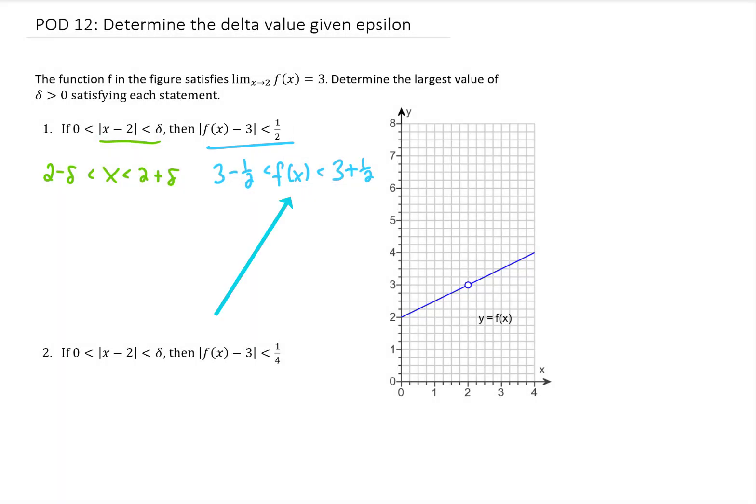And we'll start here. Where on this graph is f of x or the y value of this function between 3 minus 1 half and 3 plus 1 half? Well 3 minus 1 half is here and 3 plus 1 half is here. So this inequality is satisfied in this range right here.